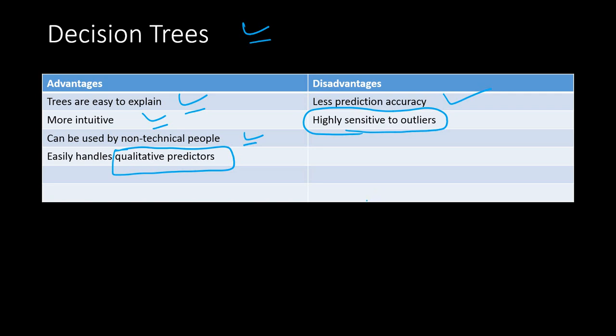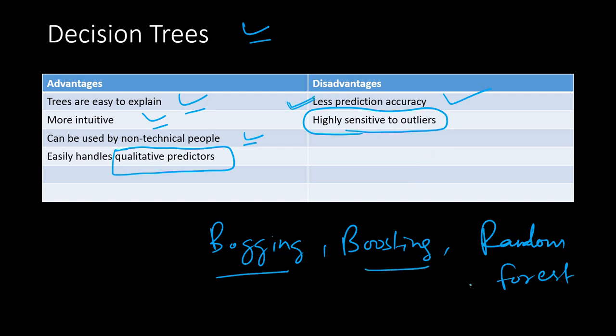There are different variations of decision tree. There are concepts like bagging, boosting, and then random forest. So these are different versions of decision tree which combines various decision trees to sort of predict the target variable. They do a better job. So the first disadvantage will go away when you use decision trees which are more powerful in nature.